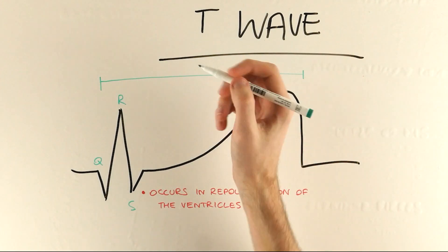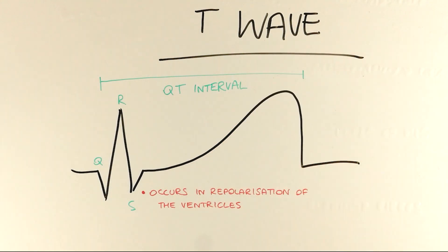Something I want to quickly touch upon is the QT interval, the time from the beginning of the Q wave to the end of the T wave, which represents the sum time for ventricular depolarization and then repolarization again. We'll cover why this is important in a second, but it should be between 400 and 440 milliseconds.